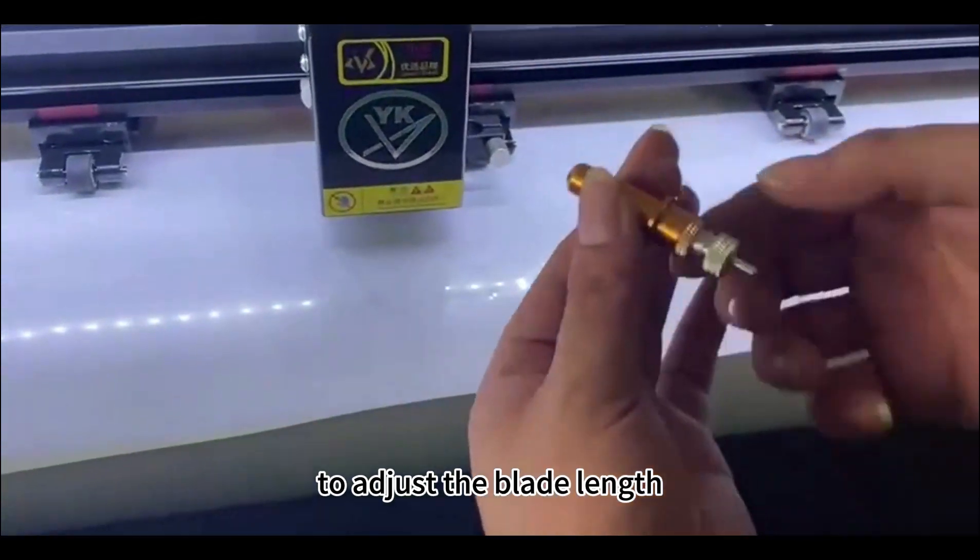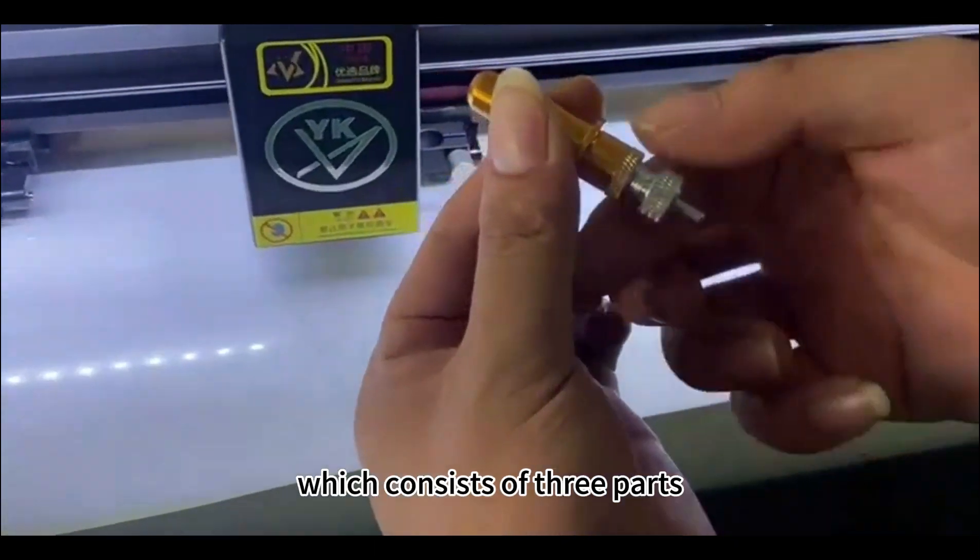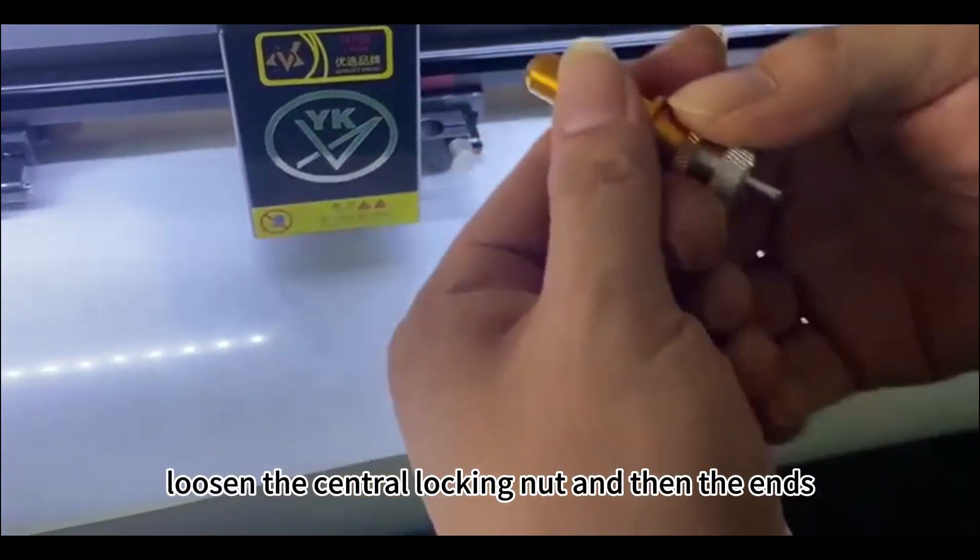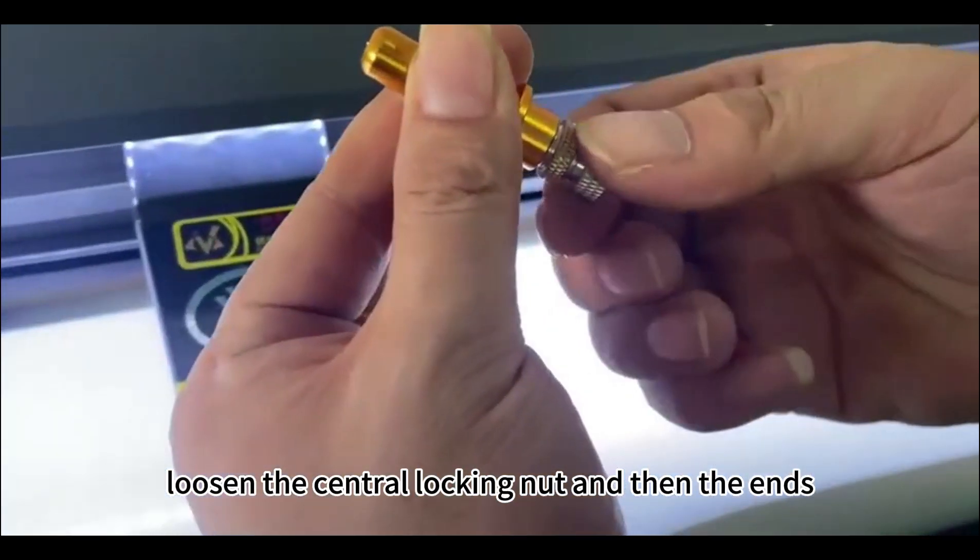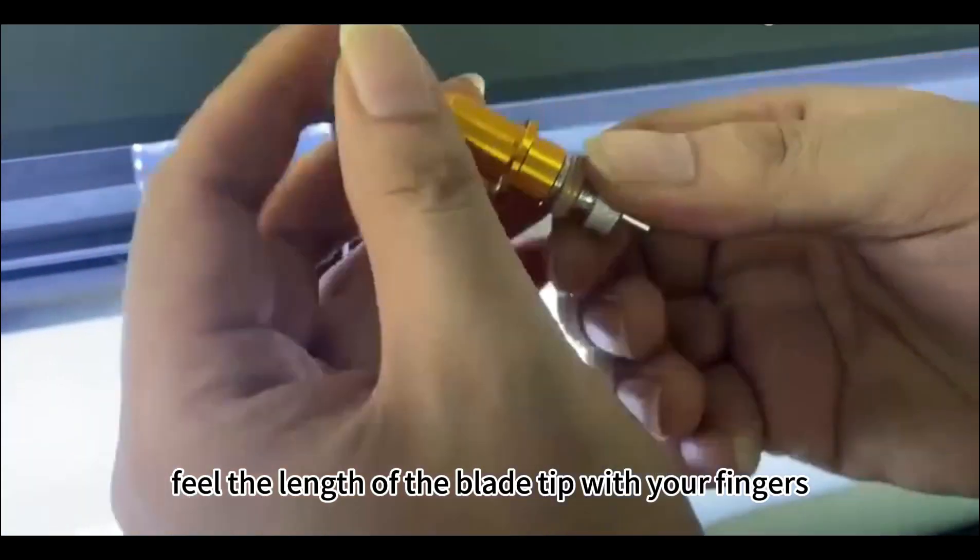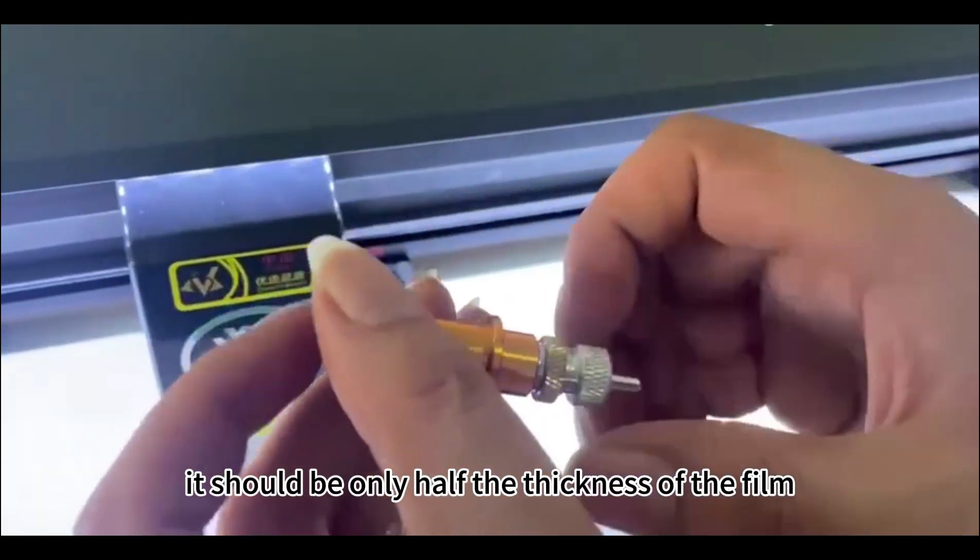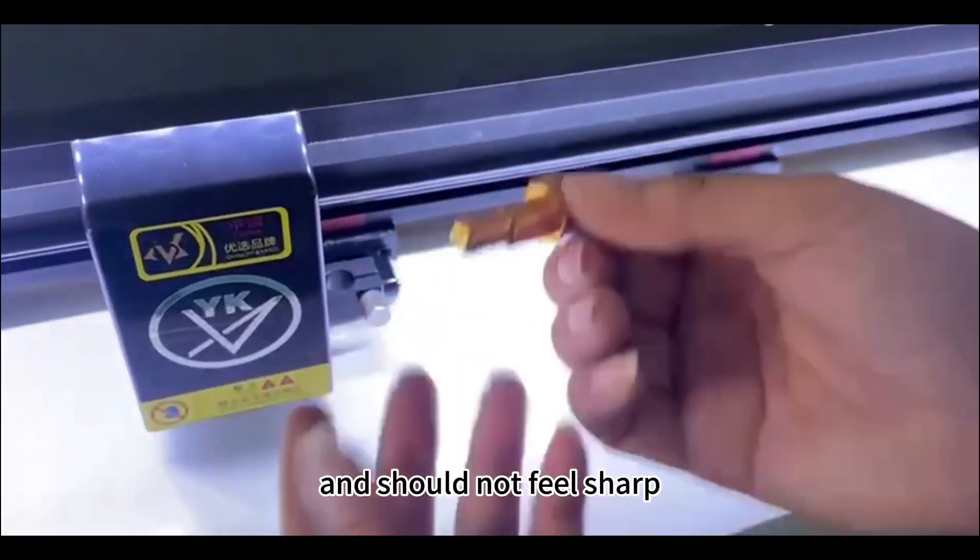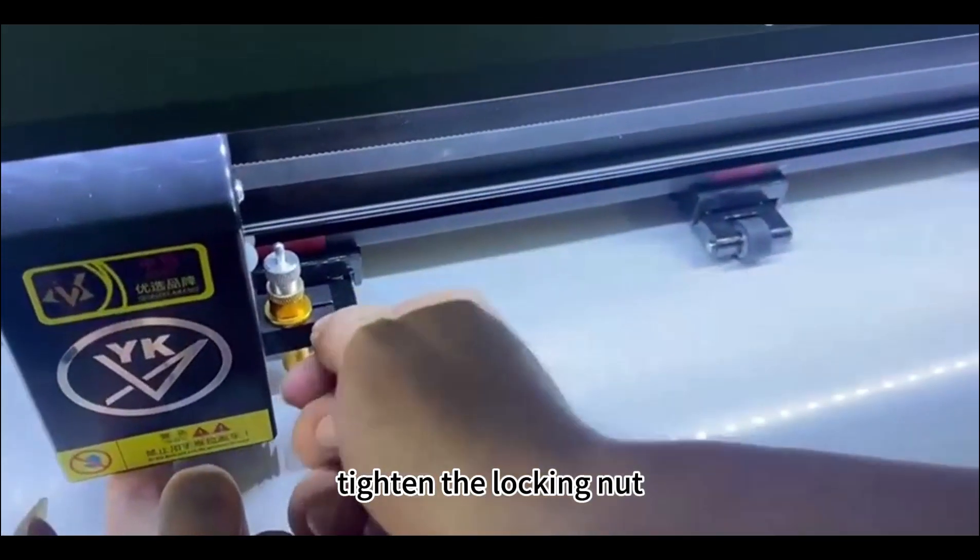To adjust the blade length, remove the golden blade holder, which consists of three parts. Loosen the central locking nut and then the ends. Feel the length of the blade tip with your fingers. It should be only half the thickness of the film and should not feel sharp. Tighten the locking nut.